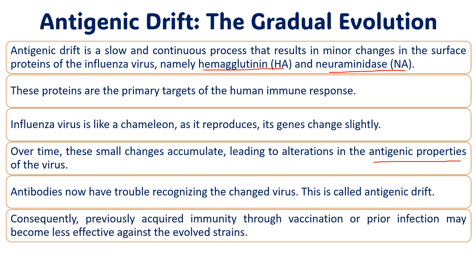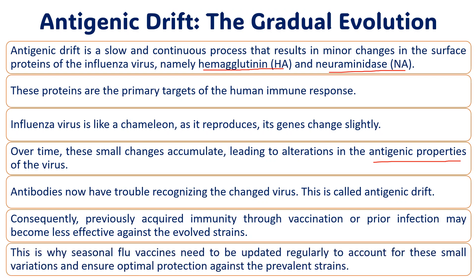The immune system that previously recognized HA or NA — hemagglutinin or neuraminidase — is no longer able to recognize the new mutated protein. This is why we have to take seasonal flu vaccines regularly, every year. Because of antigenic drift, the influenza virus accumulates more variations each year, so earlier vaccines and immune cells are no longer able to work properly against it.